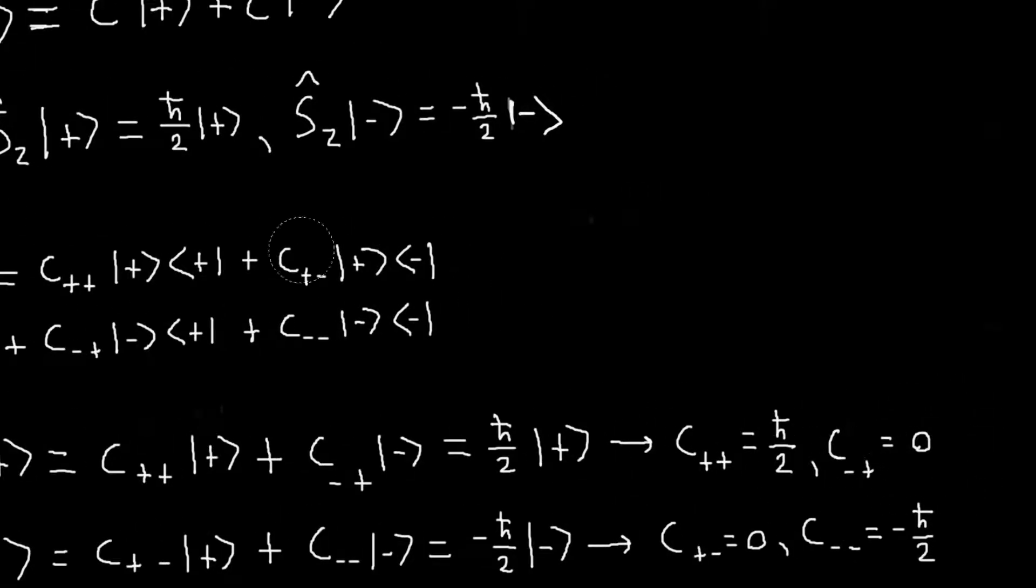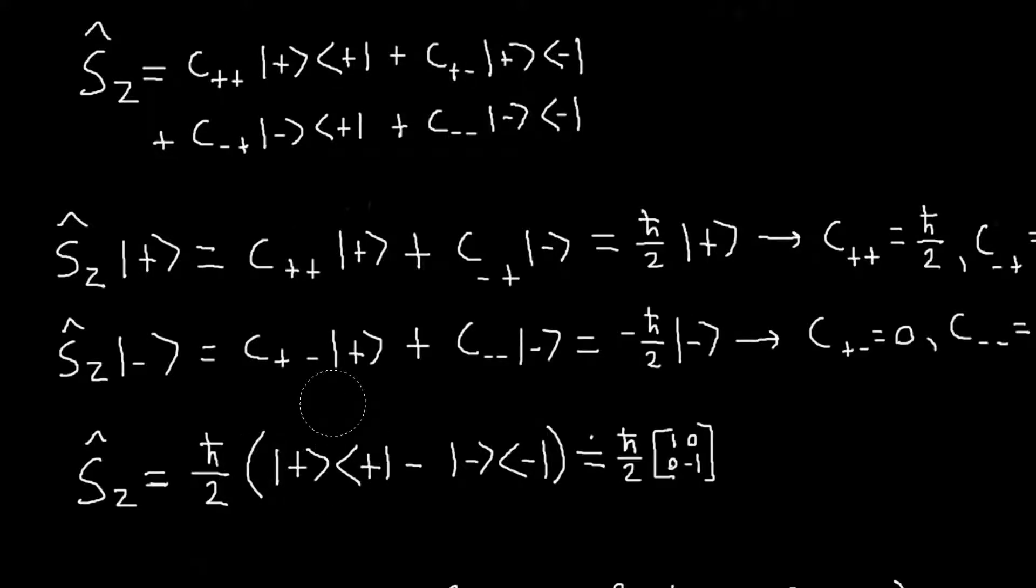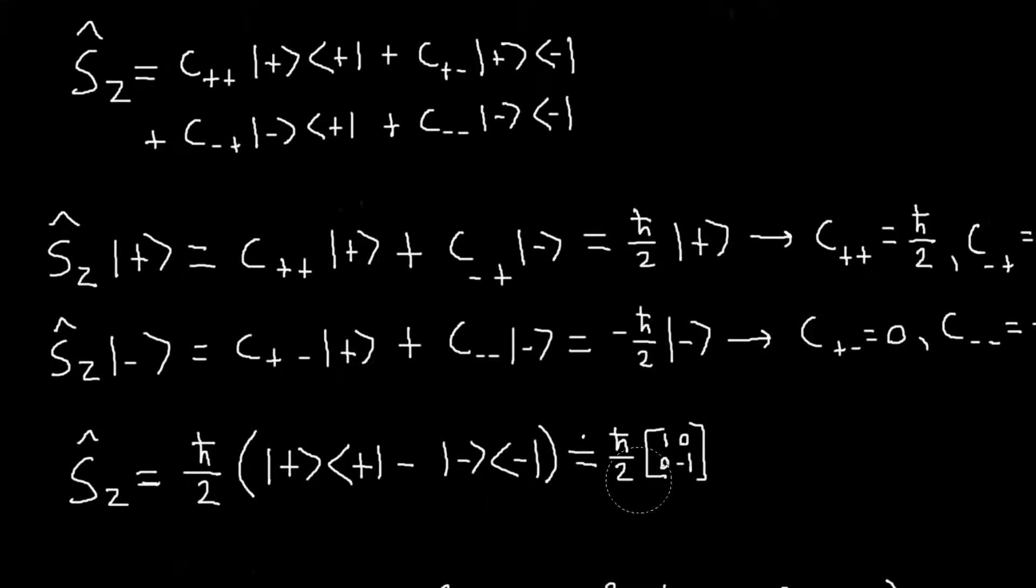And so we know all of our coefficients, so we can write our operator as a linear combination of our outer products, which is this. And then we can represent this operator using this matrix, and we'll need this later on.